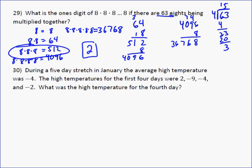Problem 30 says during a 5-day stretch in January, the average high temperature was negative 4. So the high temperatures for the first 4 days were 2, negative 9, negative 4, and negative 2. What was the high temperature for the fifth day?